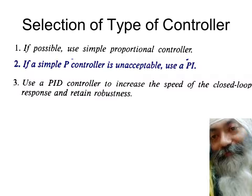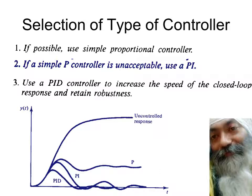This is summarized by the diagram discussed earlier. The uncontrolled response drifts to a final steady state far from the desired value. With a proportional controller, we get closer to the desired value but offset remains. With PI, the offset reduces but oscillations are still present. With PID, these oscillations are further dampened. This is the crux of everything studied so far — a consolidation of all results for selection of the type of feedback controller.